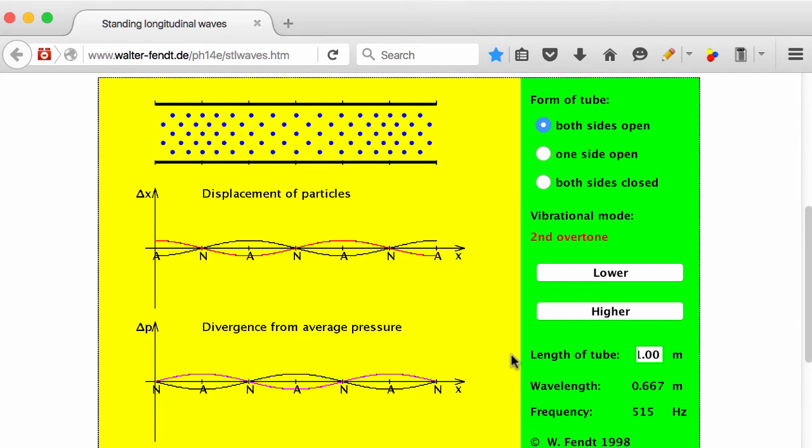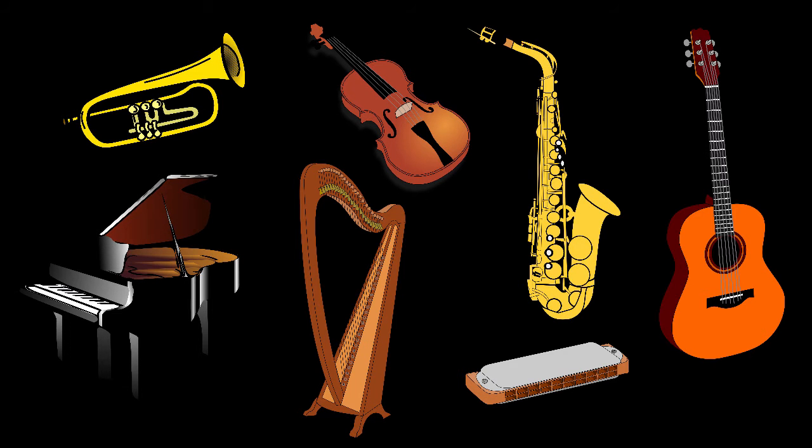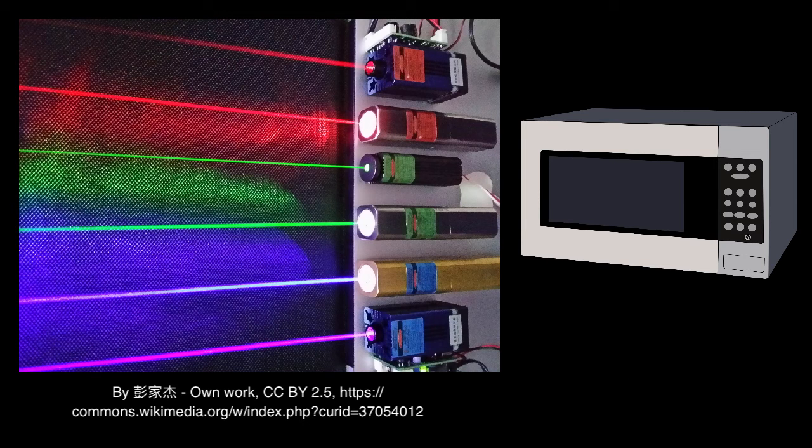Bottom line: longitudinal waves can be standing waves as well. Standing waves are employed by every single musical instrument and many different technologies, including lasers and microwave ovens. And sometimes we get standing waves where we do not want them, such as on the Tacoma Narrows Bridge.